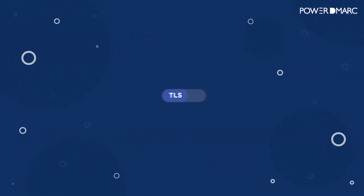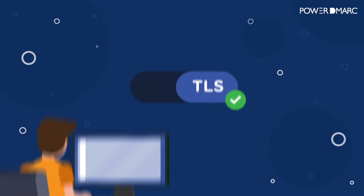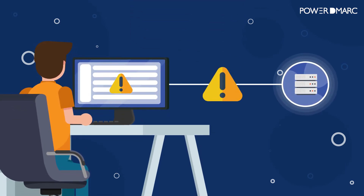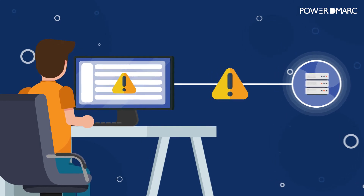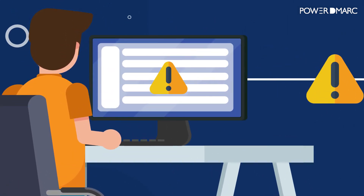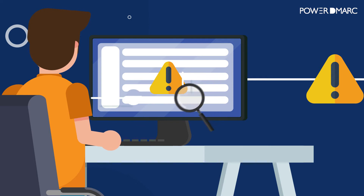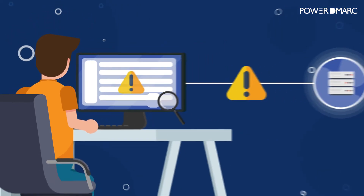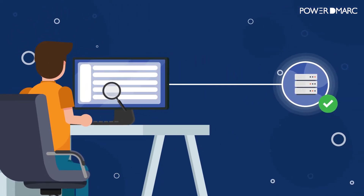Now let's assume you've made TLS encryption mandatory. Your sending and receiving servers might fail to establish a TLS encrypted connection, causing delivery issues with emails addressed to your domain. It's important that you know exactly what's going on so you can immediately fix the problem or find out who's disrupting your email.